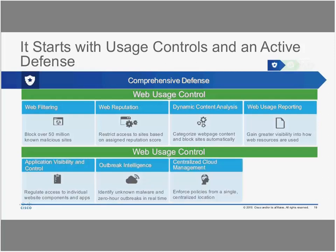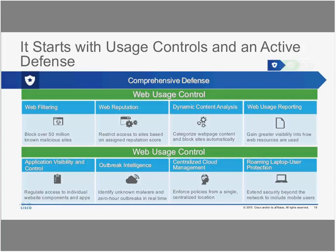Another piece of comprehensive defense is basic malware and usage control. Application visibility and control allows us to get as granular as saying we want users to be able to like and comment on Cisco posts on Facebook, but not to upload or download anything because it could contain malicious content. We can actually block activity to that granular of a level. This is an area where we really excel — granular application and social media control.